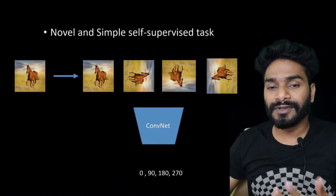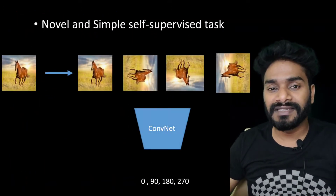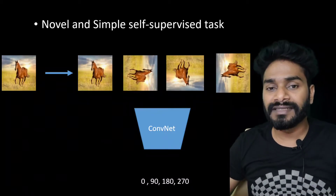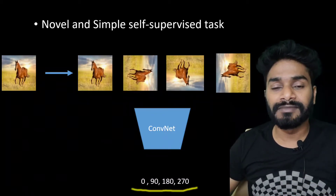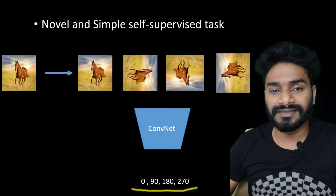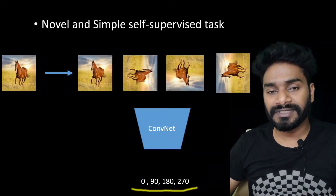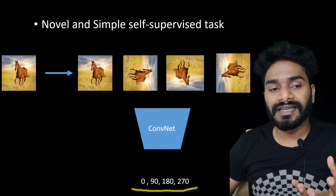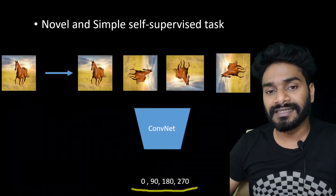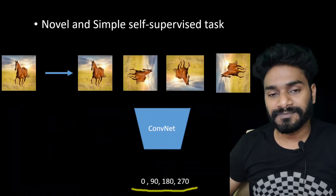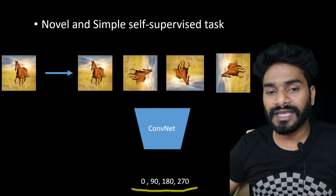We started by discussing the whole idea that when we have an unlabeled dataset, what we can do is simply take an image, rotate it, and the degree of rotation becomes your proxy labels or the proxy task. We do the training, and then we use this learned representation and fine-tune on the actual task to improve performance. So that was the whole idea.